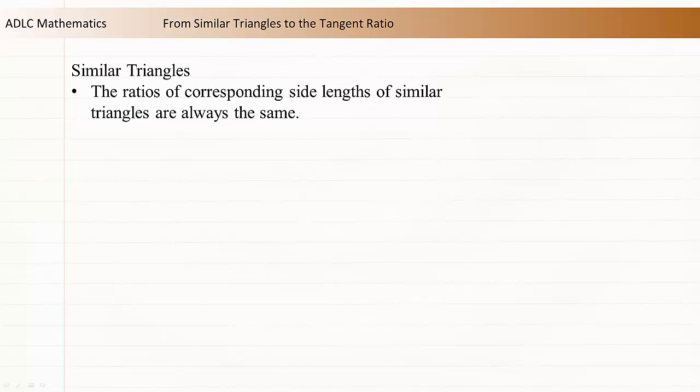Now that we've reviewed the meaning of similar, we can explore another big idea. If two right triangles contain an identical acute angle, the two triangles are similar.